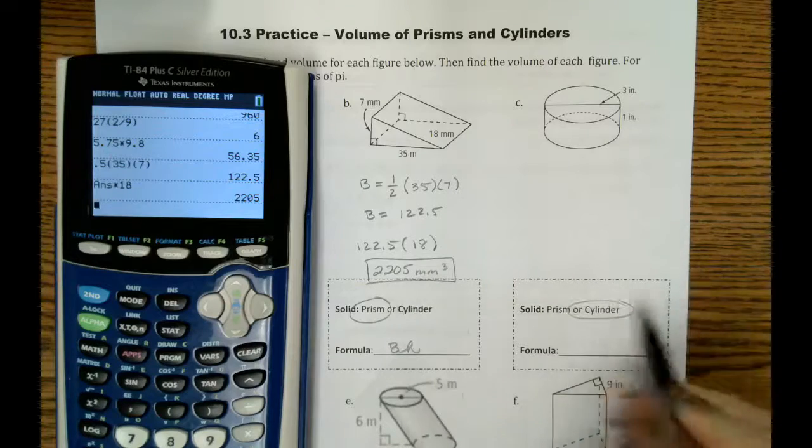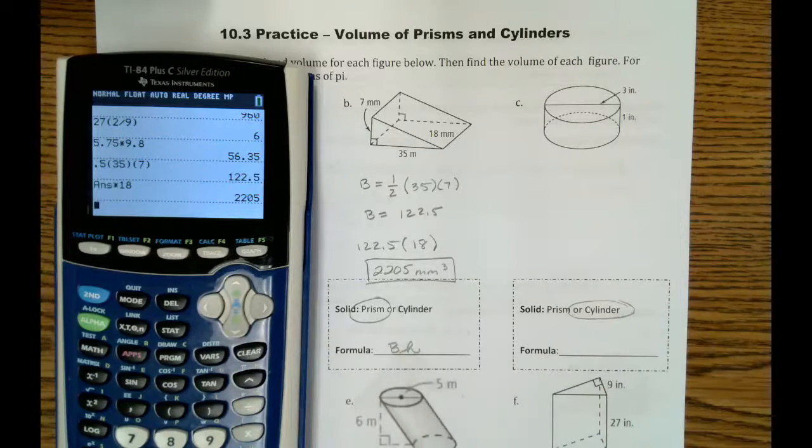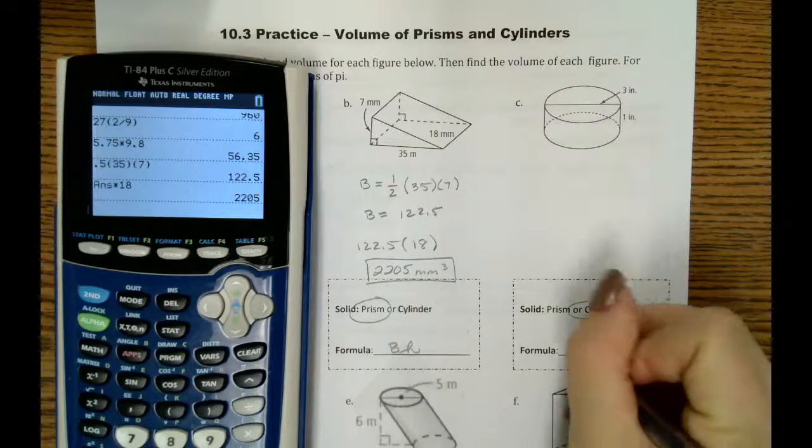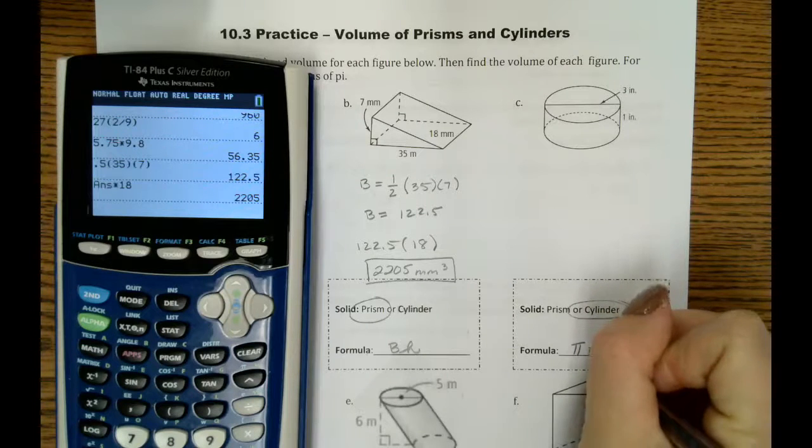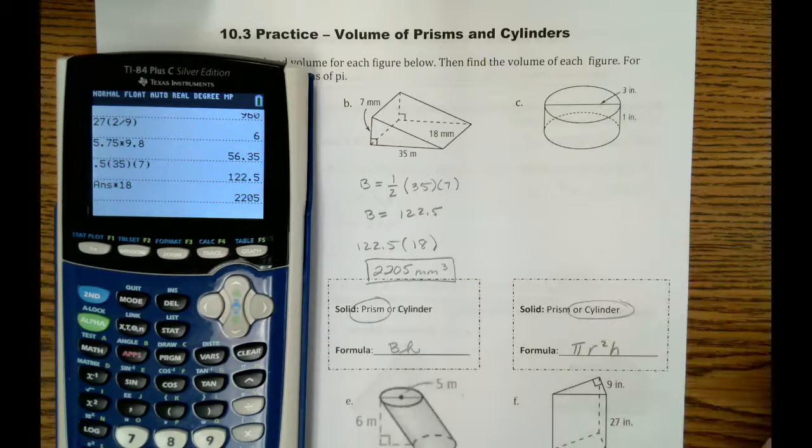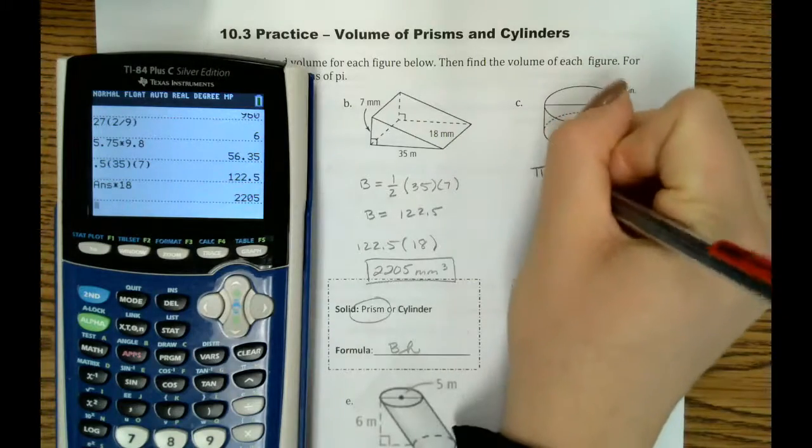Okay, letter C is a cylinder. So for a cylinder, our formula is pi r squared h. So in this case, we'll have pi.